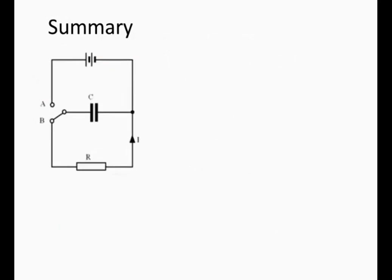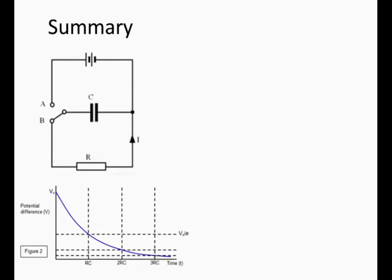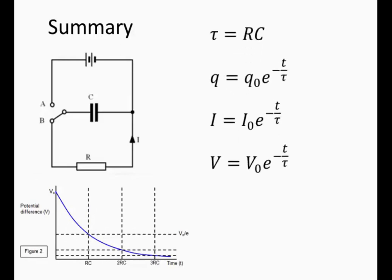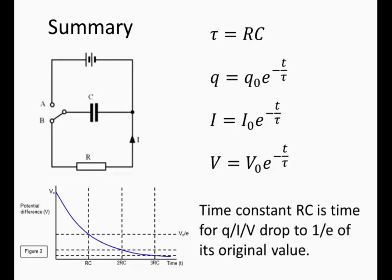To summarize: this is what we get when a capacitor discharges through a resistor. The graph for the voltage across the capacitor looks like an exponential decay. The equations apply, and tau equals RC is the time constant for that circuit. This time constant RC is the time for the charge, the current, or the voltage to drop to 1 over e of its original value. That is the time constant, RC.